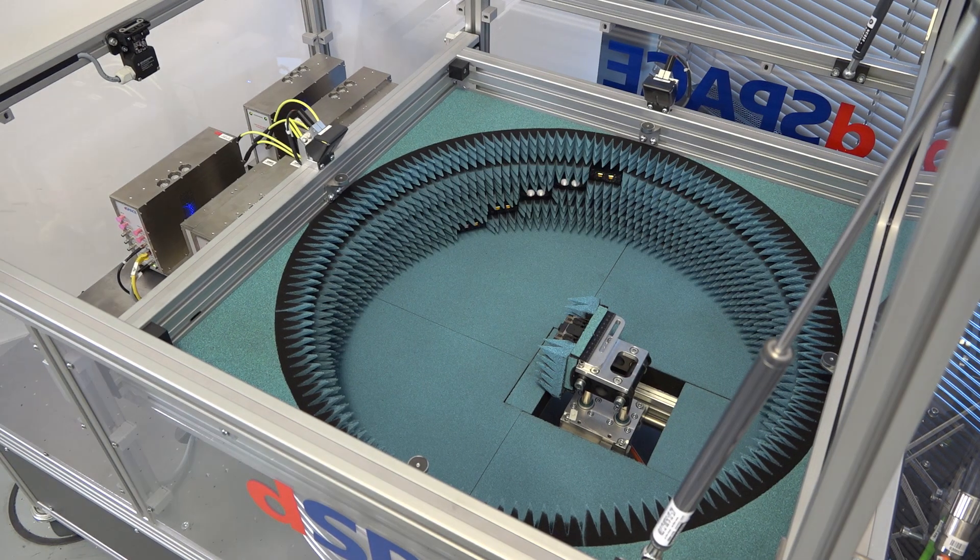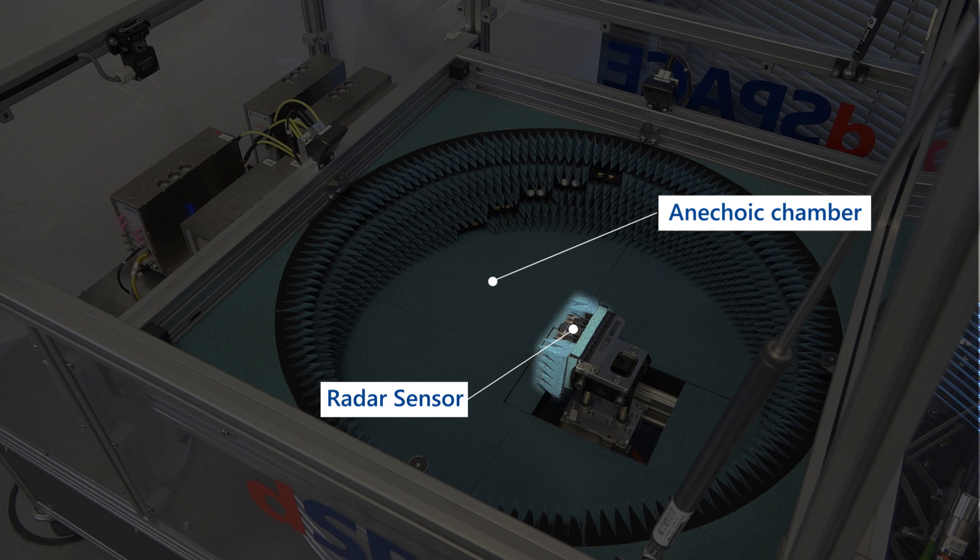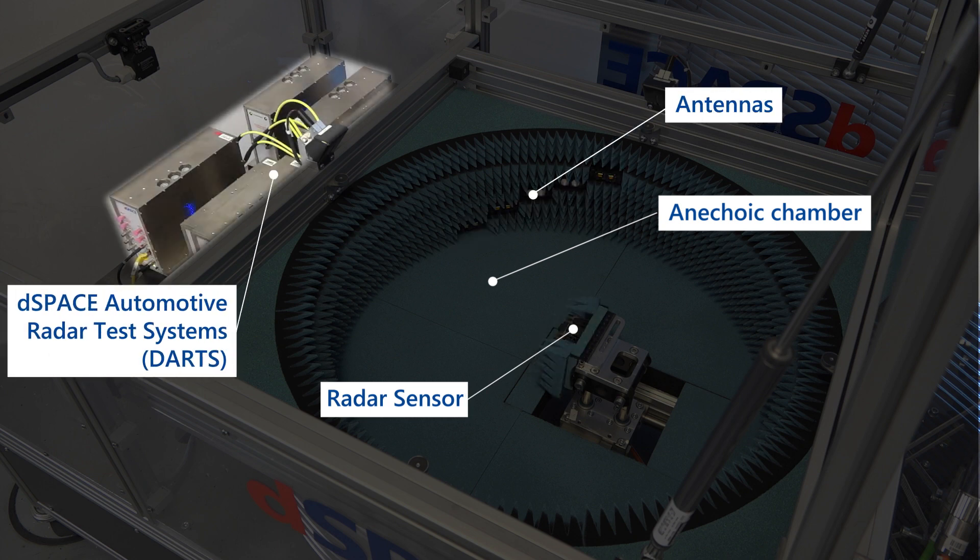The test bench consists of an anechoic chamber with the device under test, different antennas, and radar target simulators tailored to the device under test.